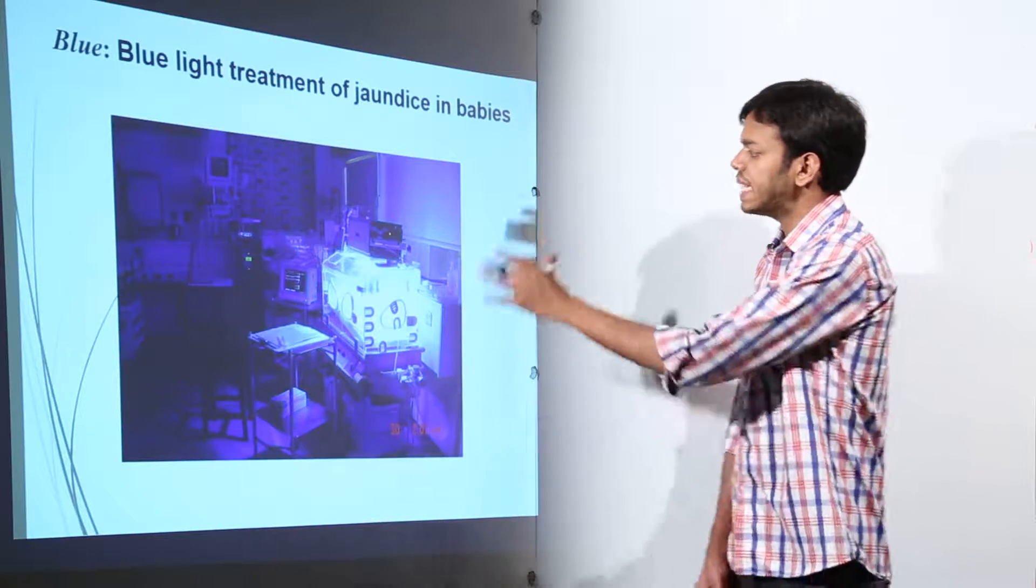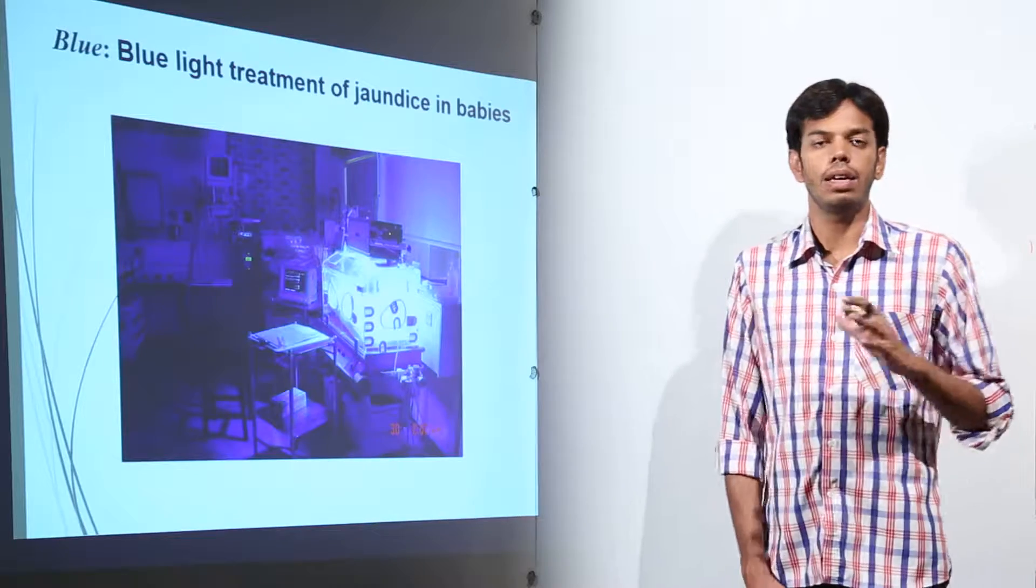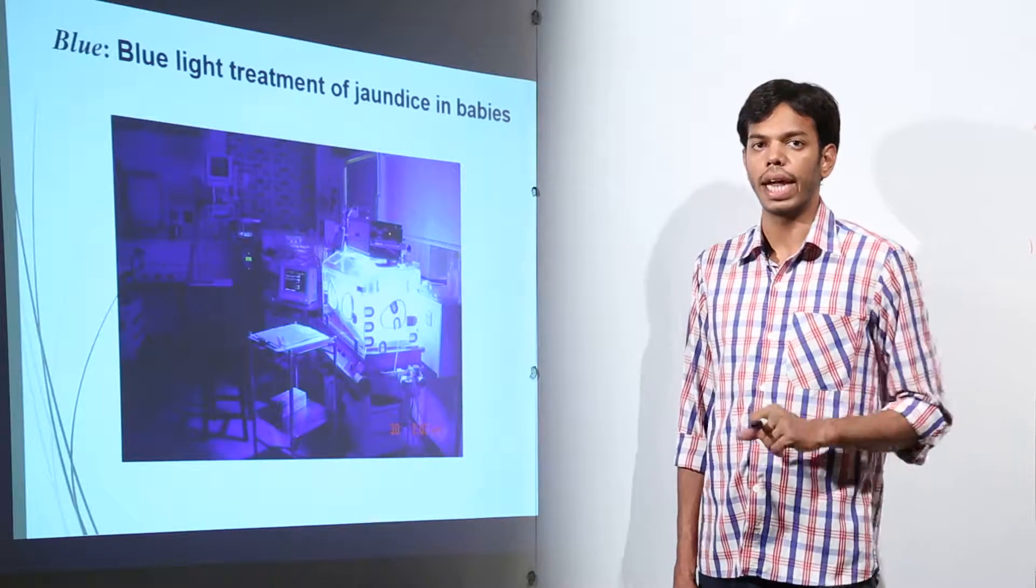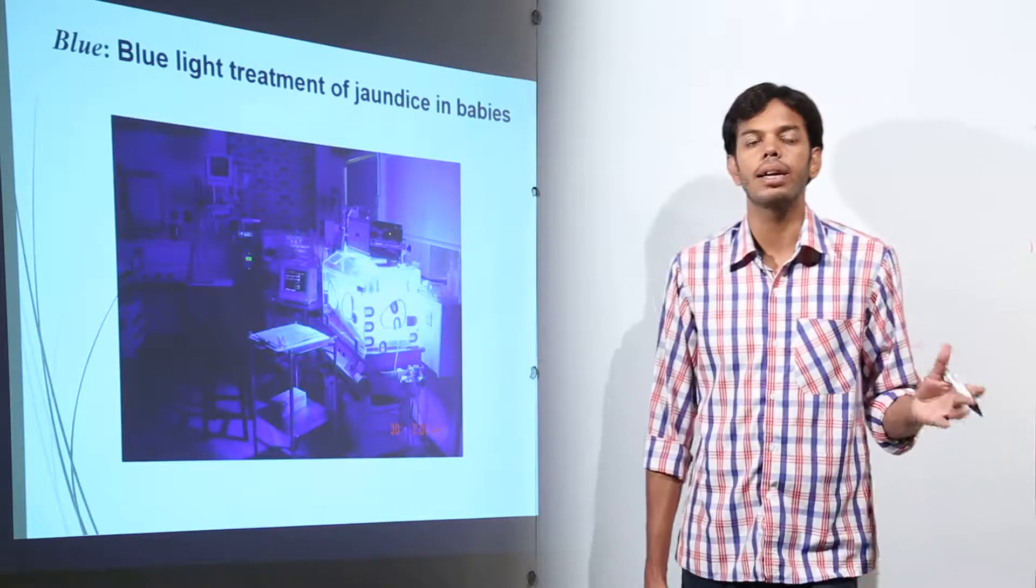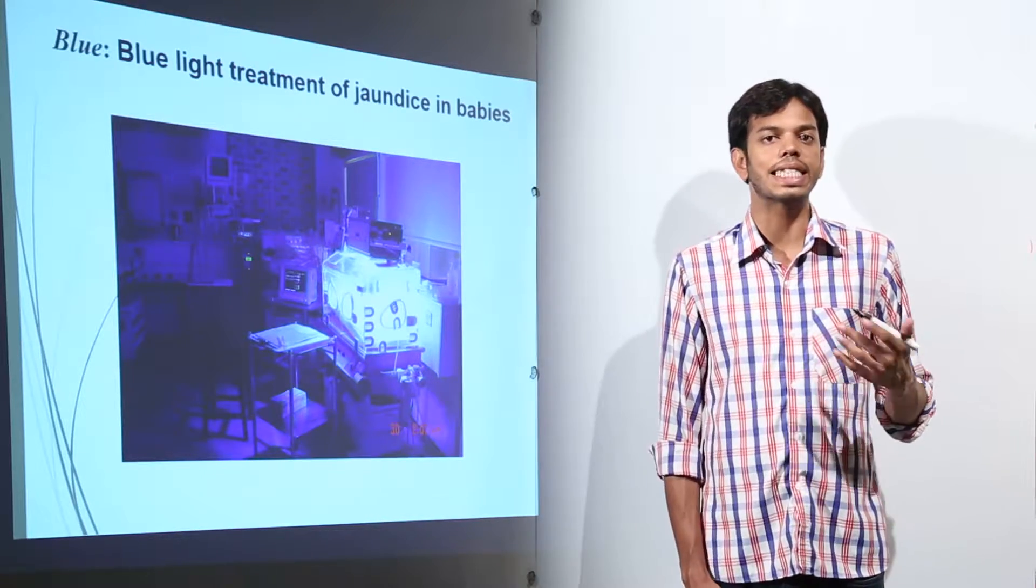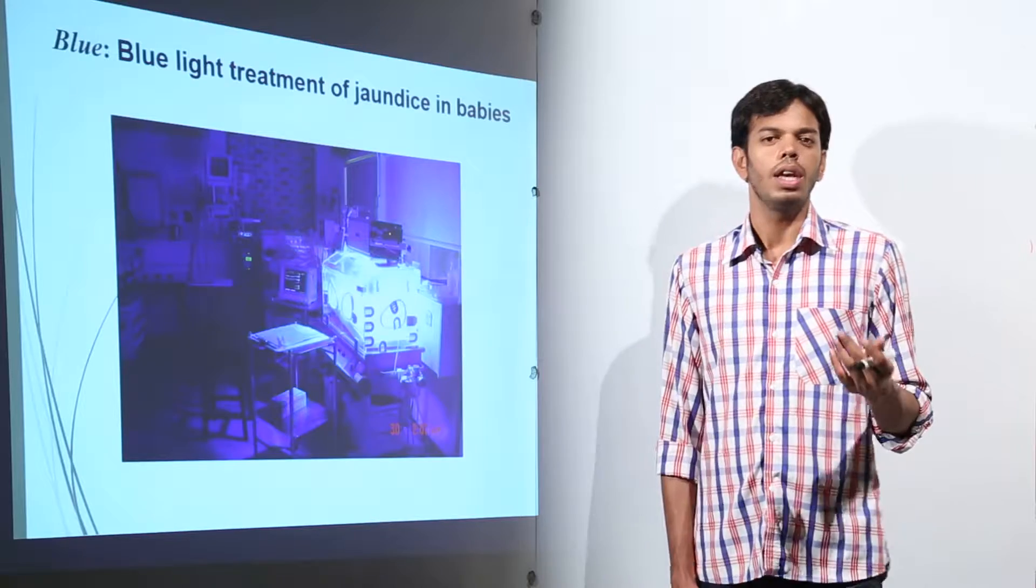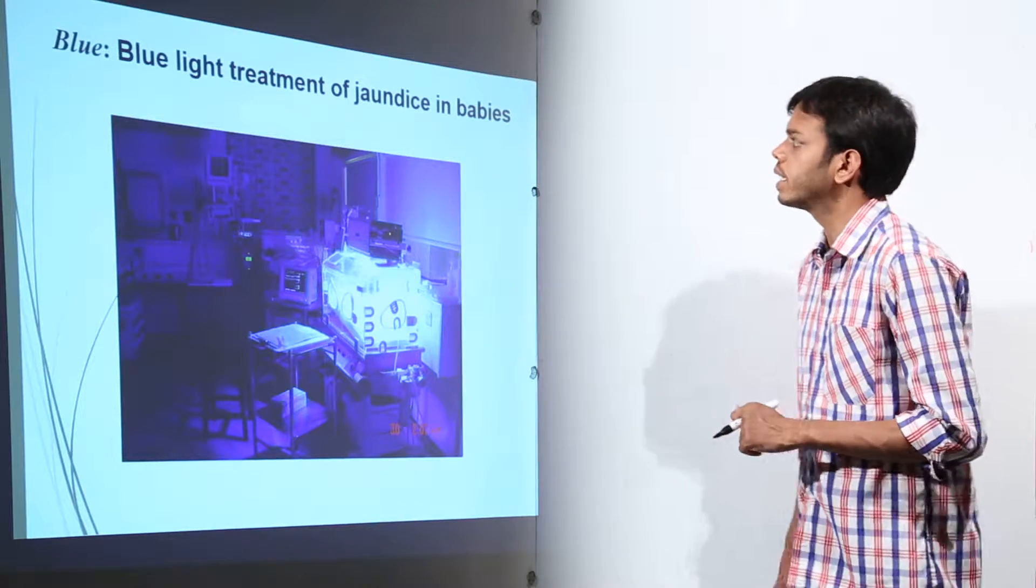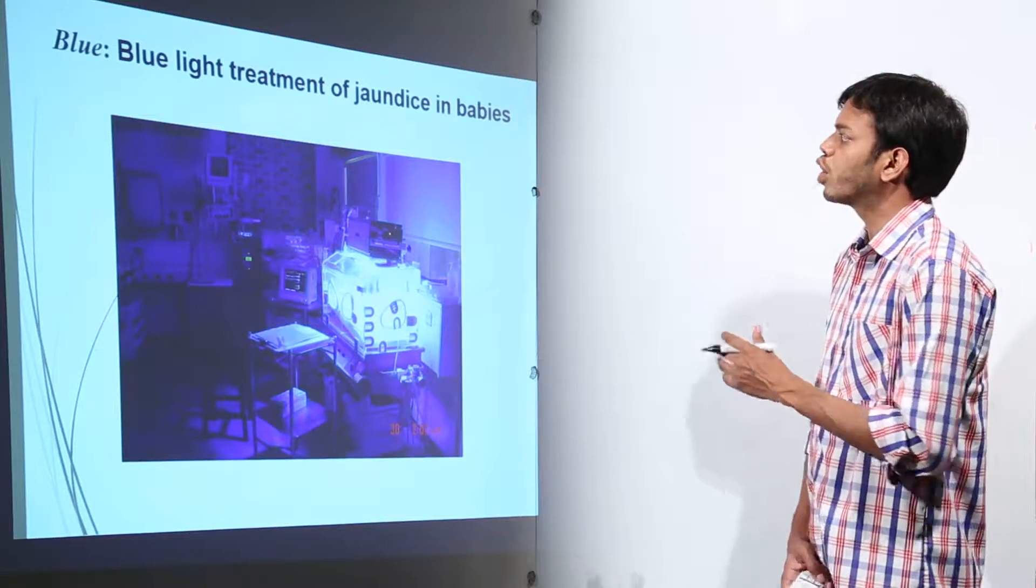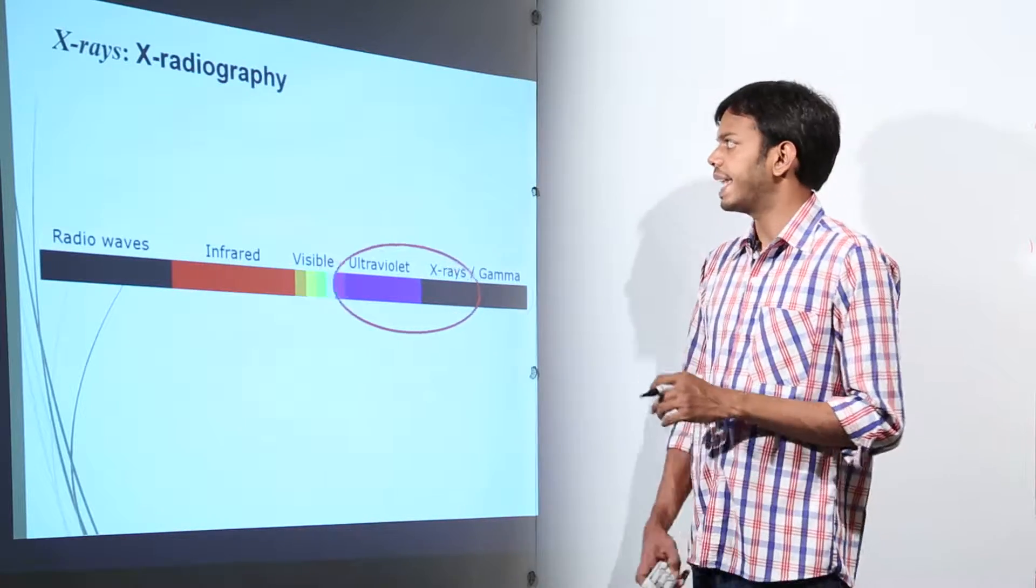So they are placed inside incubators where they are lit with the blue light. What blue light does, it breaks down the bilirubin and that broken version of bilirubin is excreted from the body in the form of urine or stool. This is how the blue light is used for the treatment of jaundice in babies.